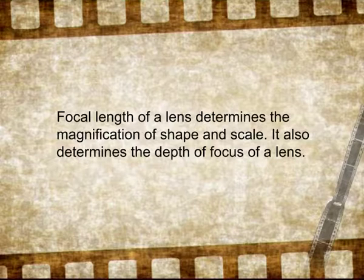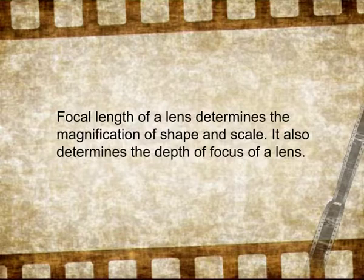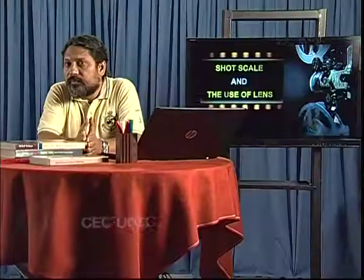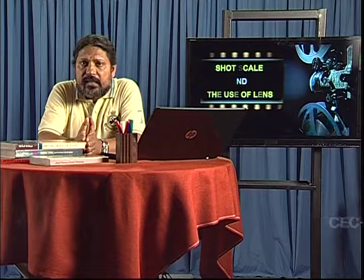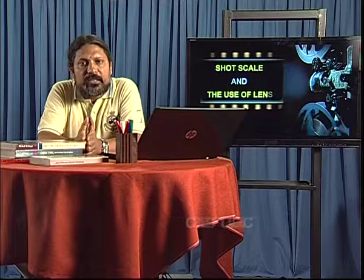The focal length of a lens not only determines how shape and scale are magnified and distorted, but it also determines the depth of focus. Depth of focus is the range within which an object is always in sharp focus. For example, if the depth of focus of a lens ranges from 10 feet to infinity, then any object placed in that range will render itself in sharp focus. Conversely, if an object is placed at less than 10 feet — say 4 feet — then the object will be seen only in a blurred condition.